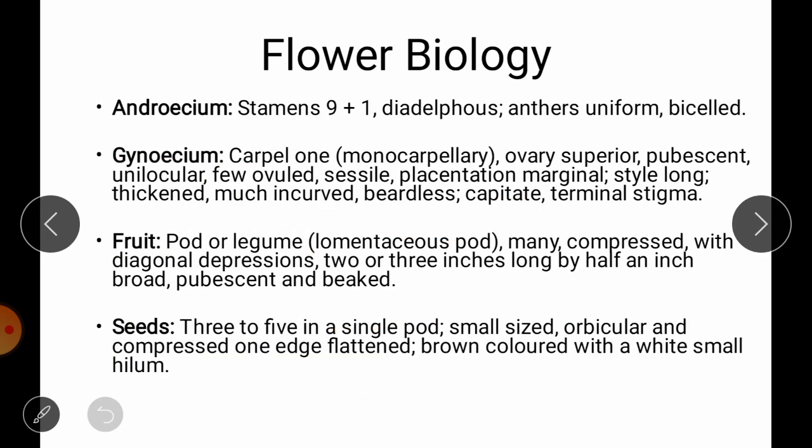The androecium: stamens are present in 9+1 condition — 9 filaments are fused together while 1 is free. This condition is called diadelphous. Anthers are uniform and bicelled. The gynoecium has a single carpel in each flower — monocarpellary. Ovary is superior, pubescent, unilocular, with few ovules, sessile, and marginal placentation. A long style is present, thickened and incurved, beardless. Stigma is capitate and terminal.